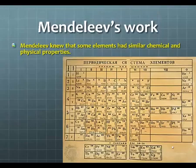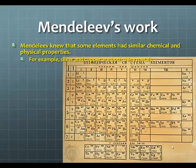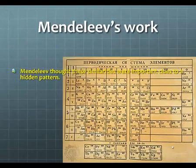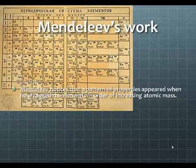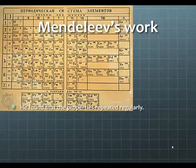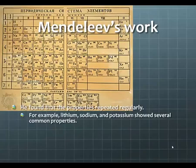Mendeleev's work. He knew that some elements had similar chemical and physical properties. So, for example, silver and copper both were shiny metals. They were also malleable and ductile. Mendeleev thought these similarities were important clues to a hidden pattern. So he noticed that a pattern of properties appeared when he arranged these elements in order of increasing atomic mass.